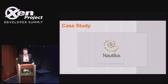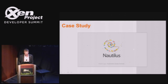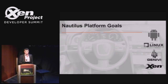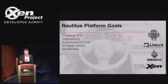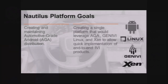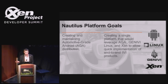Nautilus is automotive grade Android with Xen as a basis for it. We were trying to resolve a few major goals that are causing problems right now in automotive work. We were aiming to create the automotive grade Android distribution — something that vendors can use to accelerate development of Android apps for the automotive market. Our desire is to create a single platform that leverages all the AGL, Genivi, Linux, Xen, and other open source stuff to simplify and reduce time to market for end-to-end IVI products.